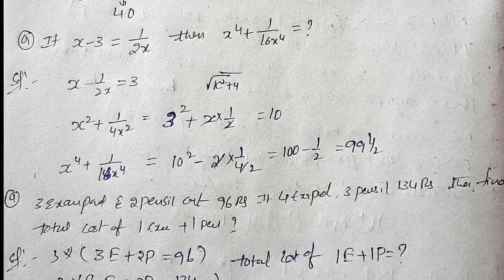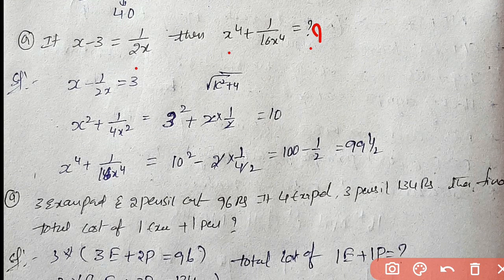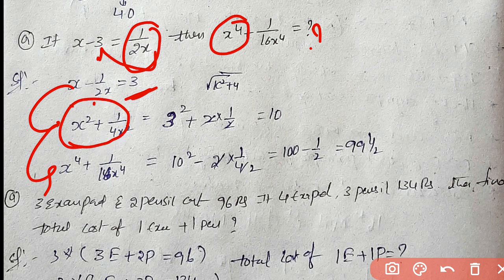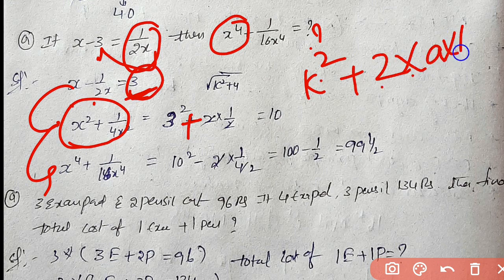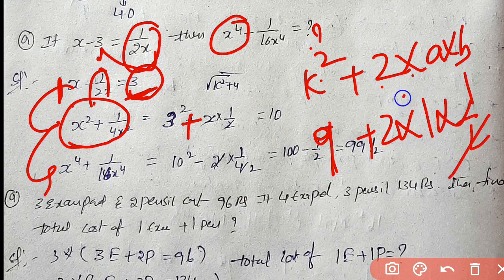Algebraic question. Definitely 2 to 3 questions. x minus 3 equals 1 by 2x. Find x power 4 plus 1 by x power 4. Multiplying by 2x, 2x squared minus 6x equals 1. So x minus 1 by 2x equals 3. Using formula a squared plus b squared equals (a plus b) squared minus 2ab. x squared plus 1 by 4x squared equals 9 plus 2, which equals 10.